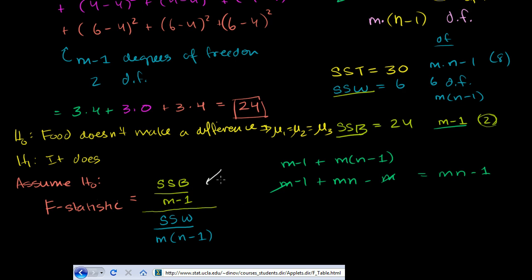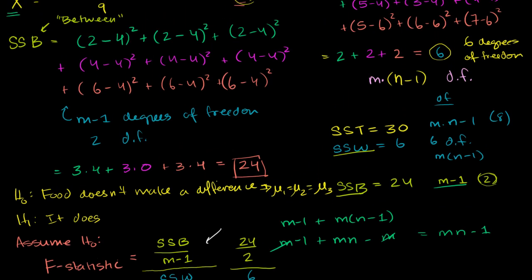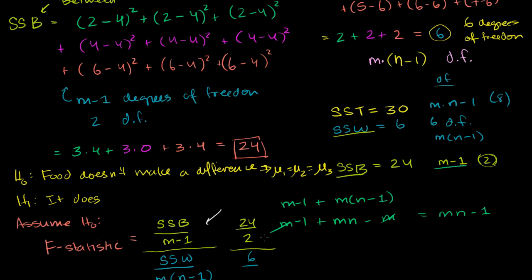Let's calculate it. Our sum of squares between was 24 with 2 degrees of freedom, and our sum of squares within was 6 with 6 degrees of freedom. So the F-statistic is (24/2) divided by (6/6), which is 12 divided by 1, giving us an F-statistic of 12. The F stands for Fisher — the biologist and statistician who developed this.